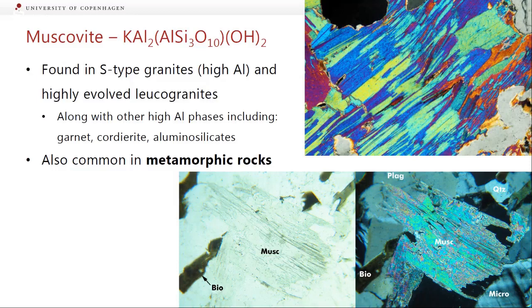Muscovite was just covered briefly in the granites lecture because it's found in S-type granites. It's very high in aluminium — instead of having magnesium and iron in the formula, it's got additional aluminiums. You also find it in highly evolved leukogranites, which are the most felsic, most evolved type of granite. In S-type granites it's often found with other high-aluminium phases including garnet, cordierite, and aluminosilicates. Muscovite is also common in metamorphic rocks, and dehydration and melting of muscovite is what usually forms the first bit of melt as things reach very high metamorphic grades.